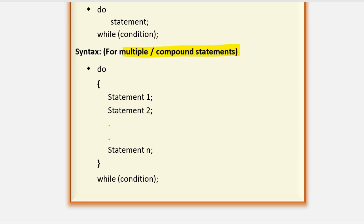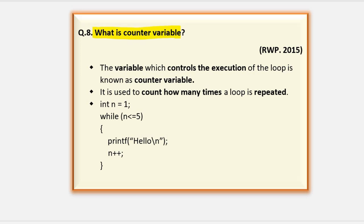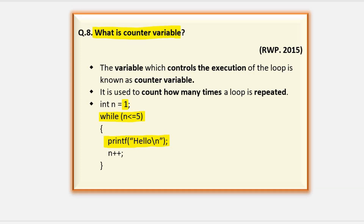What is a counter variable? A counter variable controls how many times a loop executes. For example, 'while n is less than or equal to 5' — here the control variable n is controlling the number of times the while loop executes. N has a starting value of 1 and executes until n reaches 5. The loop body prints 'Hello', so the output will be 'Hello' printed 5 times because the counter variable causes the loop to execute 5 times.